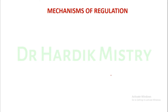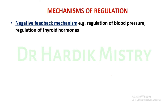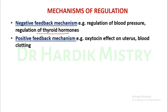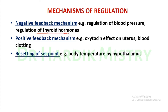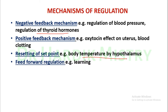Mechanisms of regulation of homeostasis: negative feedback mechanism, for example regulation of blood pressure and regulation of thyroid hormones; positive feedback mechanism, for example oxytocin effect on uterus and blood clotting mechanism; resetting of set point, for example body temperature by the hypothalamus; and feed forward regulation, for example learning.